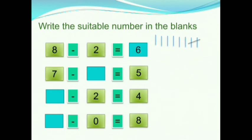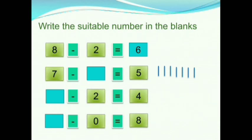The next question is 7 minus dash equals to 5. Here the answer is 5 and the first number is 7. To get the answer, we should find what to subtract from 7 to get 5. So we will draw 7 lines and cut 5 lines. How many lines are remaining? 1, 2. 2 lines are remaining. So the missing number is 2.